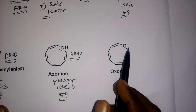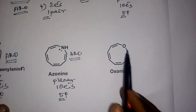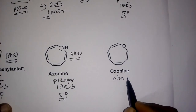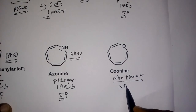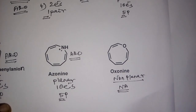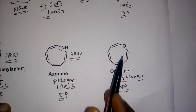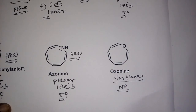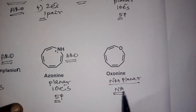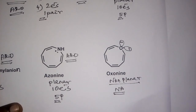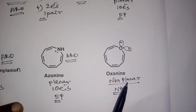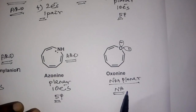The oxygen analogue of azonine — where nitrogen is replaced by oxygen — is non-planar, and therefore non-aromatic. Why? From VSEPR theory, oxygen has two lone pairs. Lone pair–lone pair repulsion is greater than lone pair–bond pair and bond pair–bond pair repulsion. Because of this lone pair repulsion, the molecule loses planarity, loses aromaticity, and becomes non-aromatic.